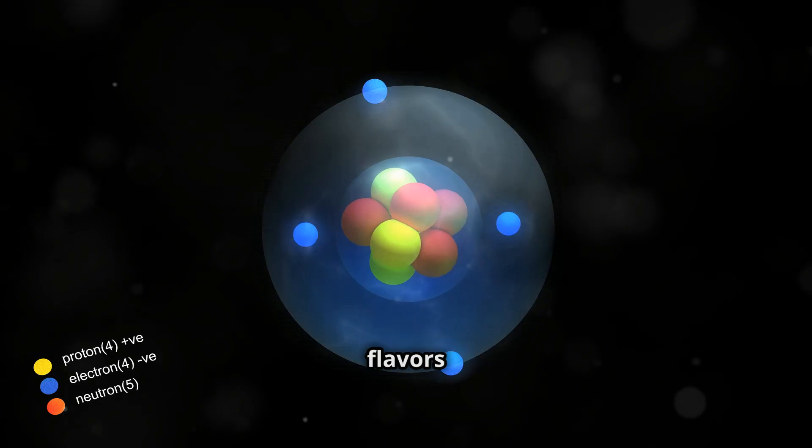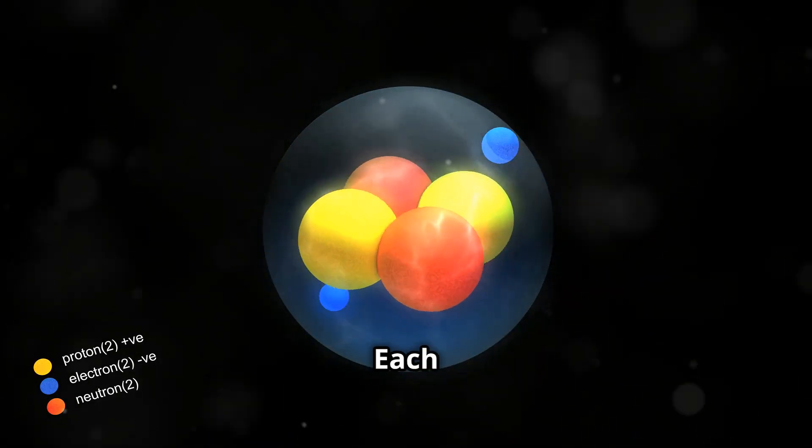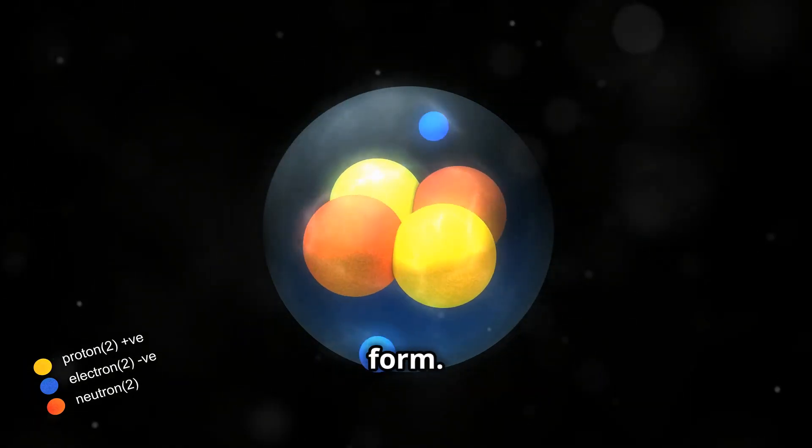Quarks come in six different flavors: up, down, charm, strange, top and bottom. Each of these flavors has unique properties that contribute to the behavior of the particles they form.